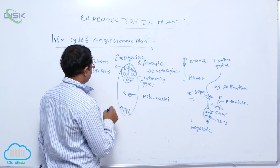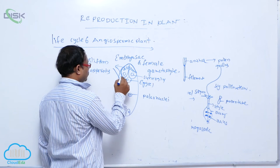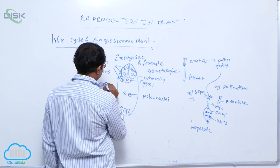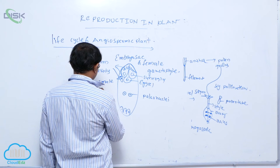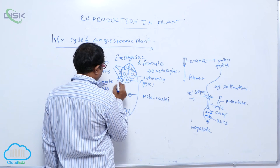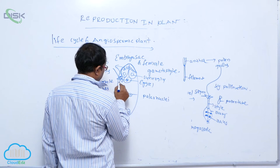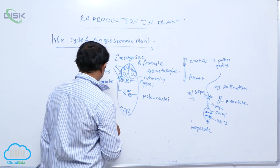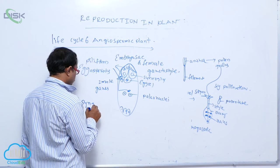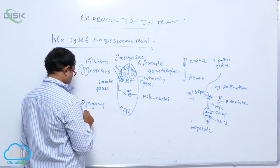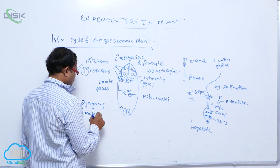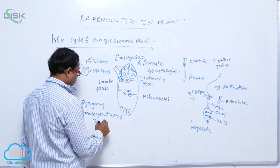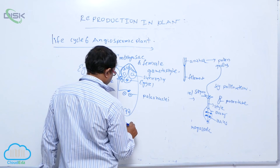At the time of fertilization, the pollen tube enters and carries the male gametes into the embryo sac. Two male gametes are present. One male gamete fuses with the egg cell — this is syngamy — to form a zygote. The zygote is then converted into the embryo.